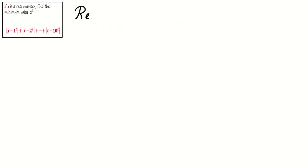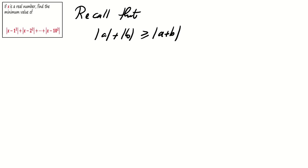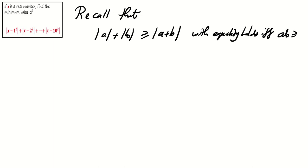Recall the following result: the sum of absolute values is at least equal to the absolute value of the sum. That is, |a| + |b| ≥ |a + b|, with equality holding if and only if a times b is at least zero.